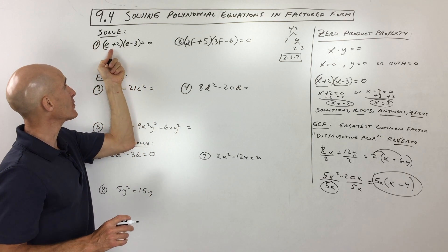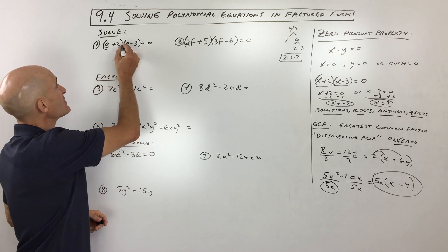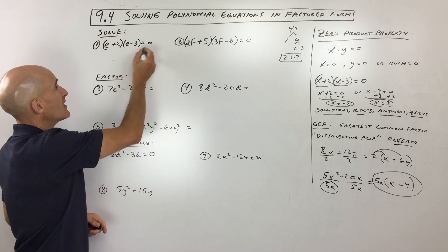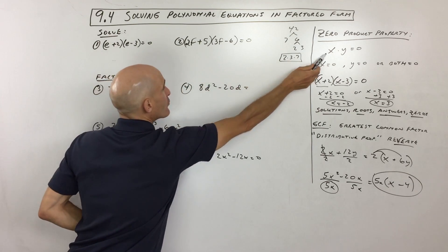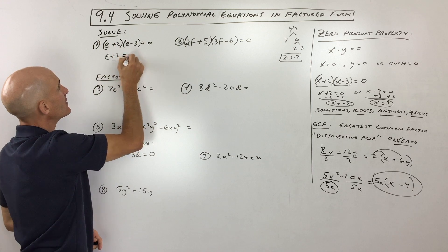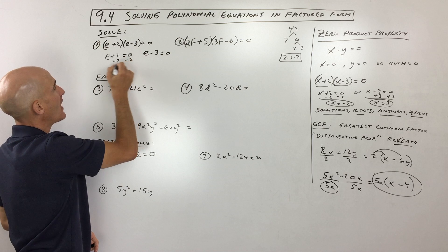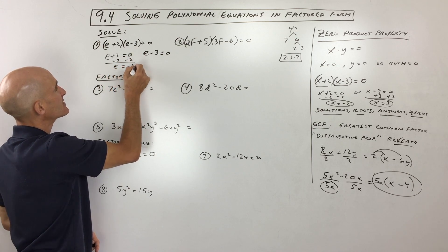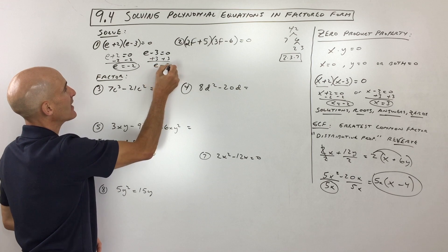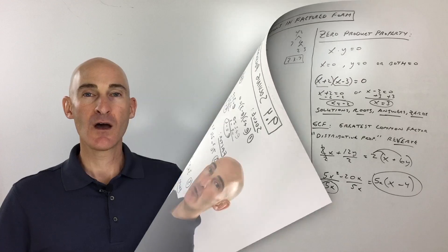Let's jump into examples. Take (e+2)(e-3) equals zero. You can see these are multiplied together and equal to zero. Using the Zero Product Property, we set each factor equal to zero: e plus 2 equals zero, and e minus 3 equals zero. Subtracting 2 gives e equals negative 2, and adding 3 gives e equals positive 3. So our answers are negative 2 or 3 — or we could say those are our roots.